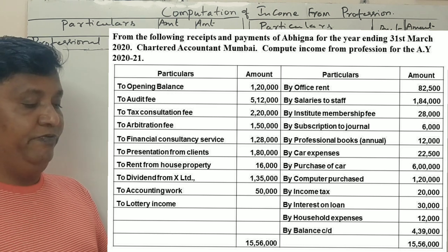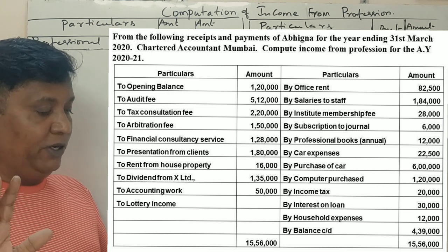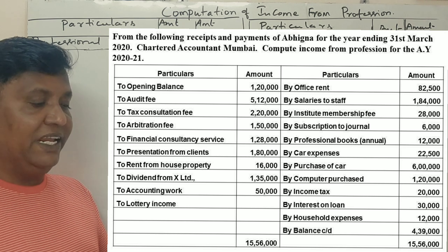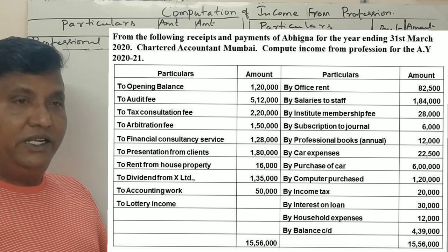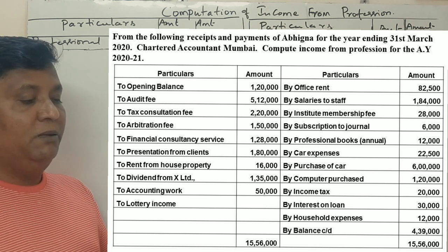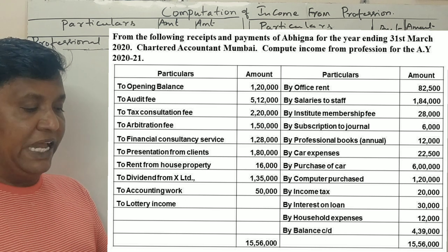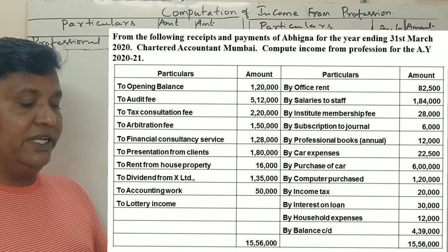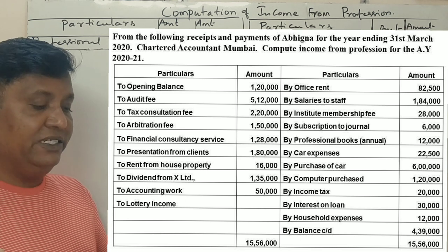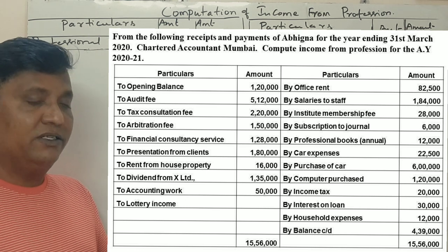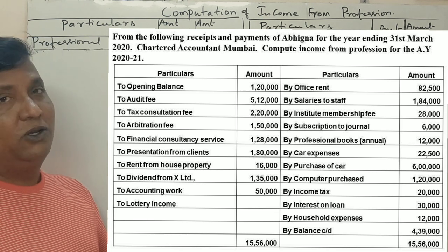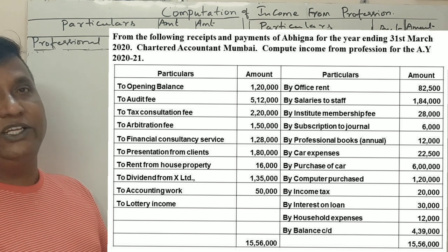Lottery income. On the payment side: office rent, salary to staff, institute membership fee, subscription to journal, professional books, car expenses, purchase of car, computer purchase, income tax, interest on loan, household expenses, and closing balance of cash.